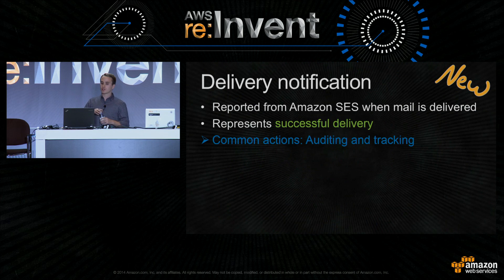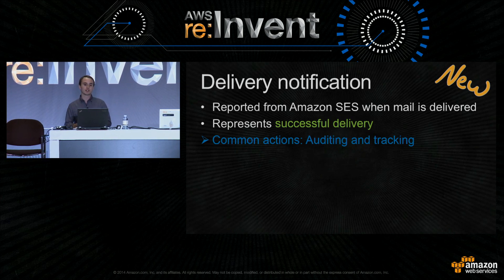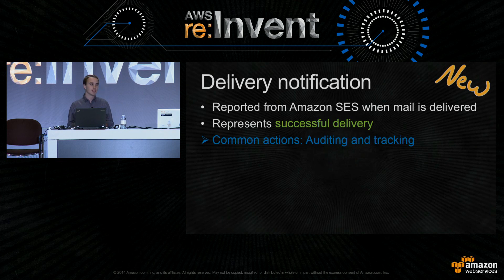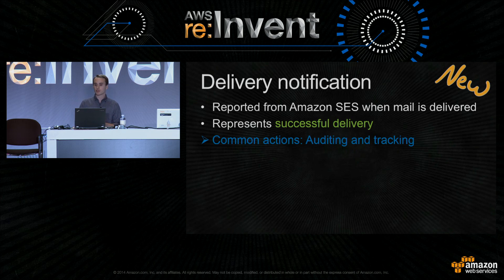Next is delivery notifications — new to SES this year, and a big customer request. Delivery notifications enable you to know the instant that SES hands off your email to a receiving mail server. In addition to a delivery timestamp, the notifications contain other useful information, such as the response message of the remote mail server that accepted your email. We're seeing some cool use cases for this feature, such as using the notifications to help track time-sensitive emails.